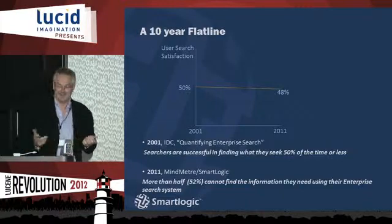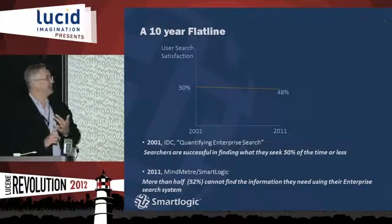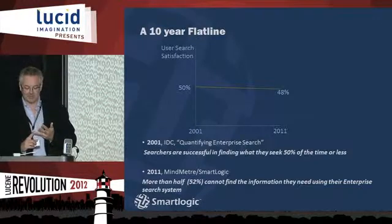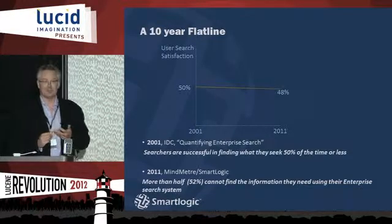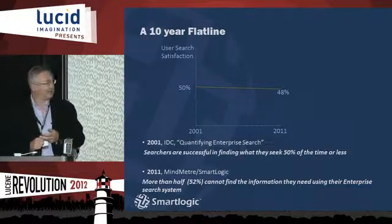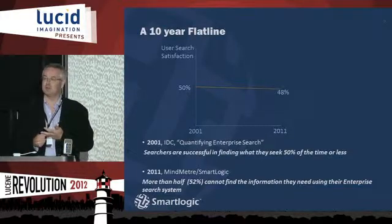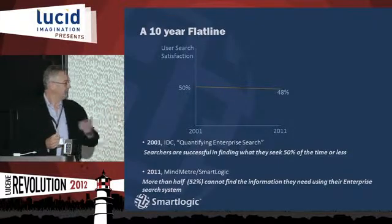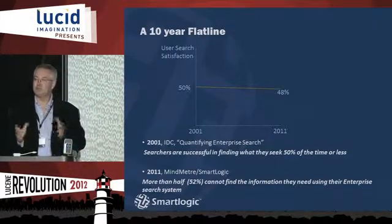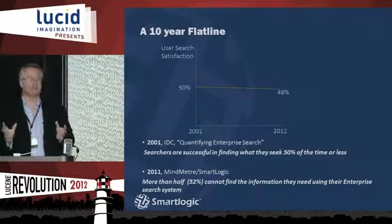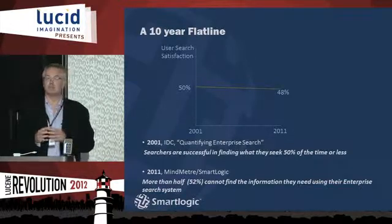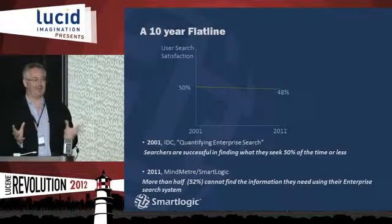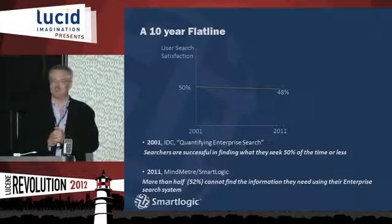We've also had a ten-year flat line, from a user perspective of search. In 2001, IDC asked users if they were successful in finding what they were looking for, and they said about 50% of the time they can find what they're looking for. In 2011, we commissioned a company called Mind Meter to do the same thing — asked 2,000 users — and less than half could find what they're looking for. So we've had a really good decade as search specialists.